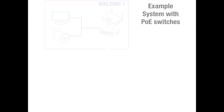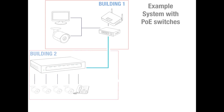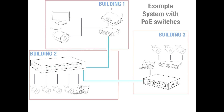Here is an example system showing how PoE switches may be used. In building 1, there is a router connected to a PoE switch. This switch is connected to an IP camera and a computer. Using network cable, the switch in building 1 is connected to a second switch in building 2. This switch is powering a number of IP cameras, a VoIP phone, and is also connected to a final switch in building 3. In building 3, there is one other VoIP phone and a network video recorder which is then powering three final IP cameras. This example shows how switches can be daisy-chained and how useful they are in expanding your network.